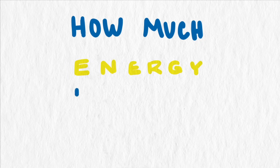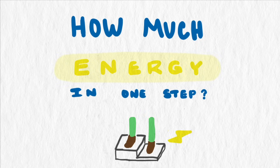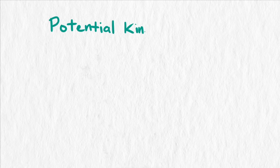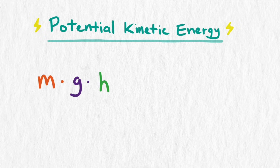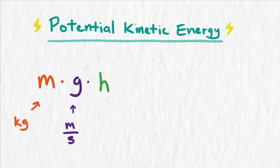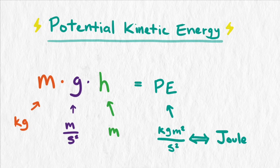There are several ways we could figure out how much energy each step creates, but we're going to use the physics of potential kinetic energy. To calculate the potential energy of an object, we multiply the mass times the height above the ground times the acceleration due to gravity. If we use kilograms and meters, then we end up with energy in joules.